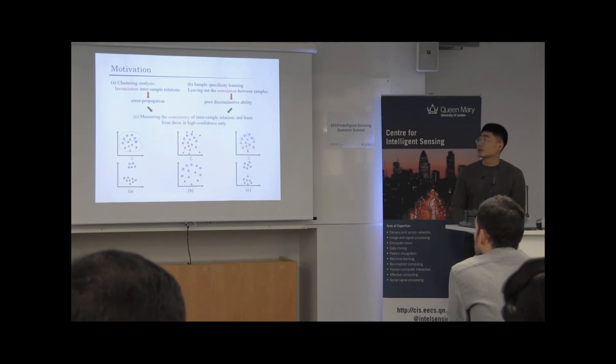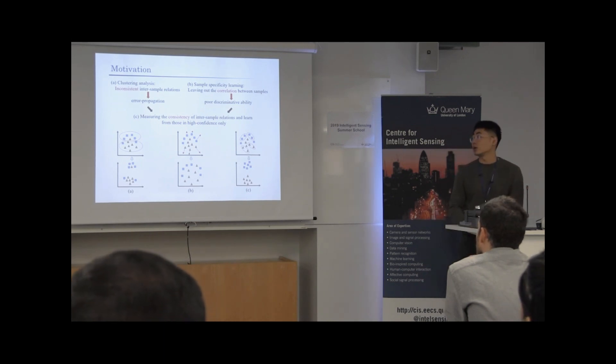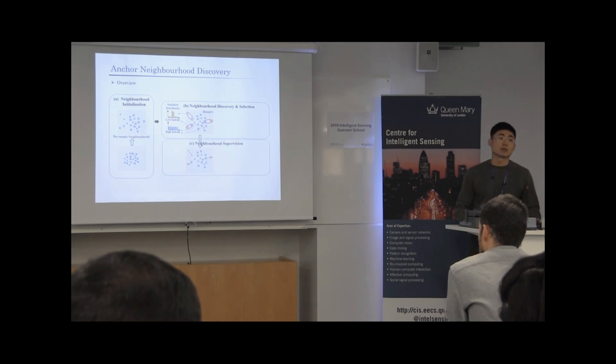So a straightforward and also simple idea is: can we improve the quality of deep learning models by measuring the consistency of the hypothesis in the sample relation and then train the CNN model according to those in high confidence only? So to that end, we propose a method called the anchor neighborhood discovery. The idea is quite straightforward. We mount the neighborhoods for each sample and then estimate their consistency to the ground-truth membership, then train the CNN model according to those in high confidence only, and the whole training process is divided into several rounds, so that we are able to take advantage of as much neighborhood information as possible, along with the improvement of feature qualities.